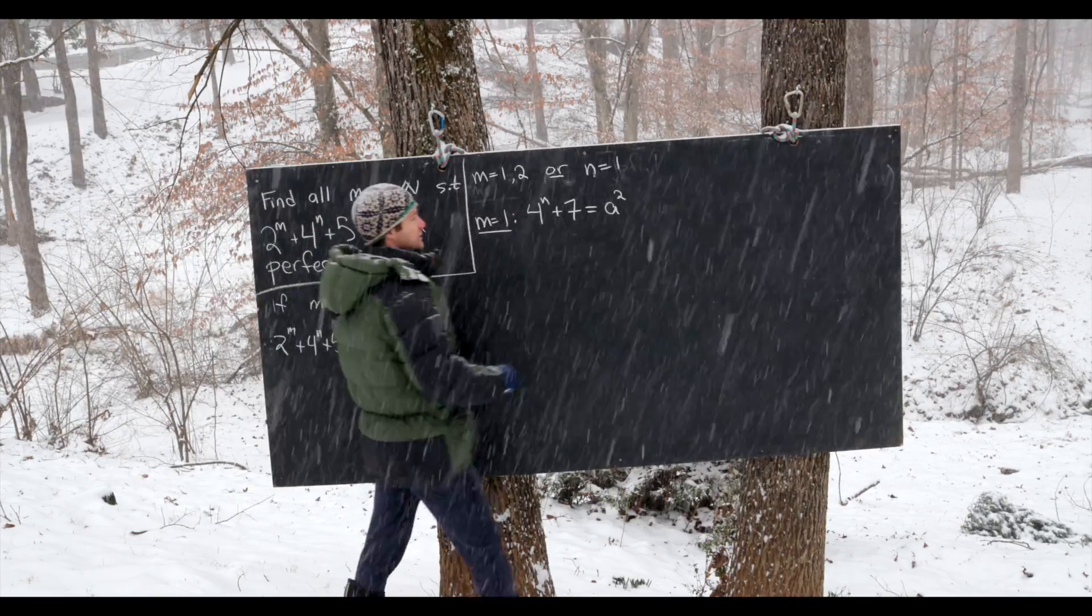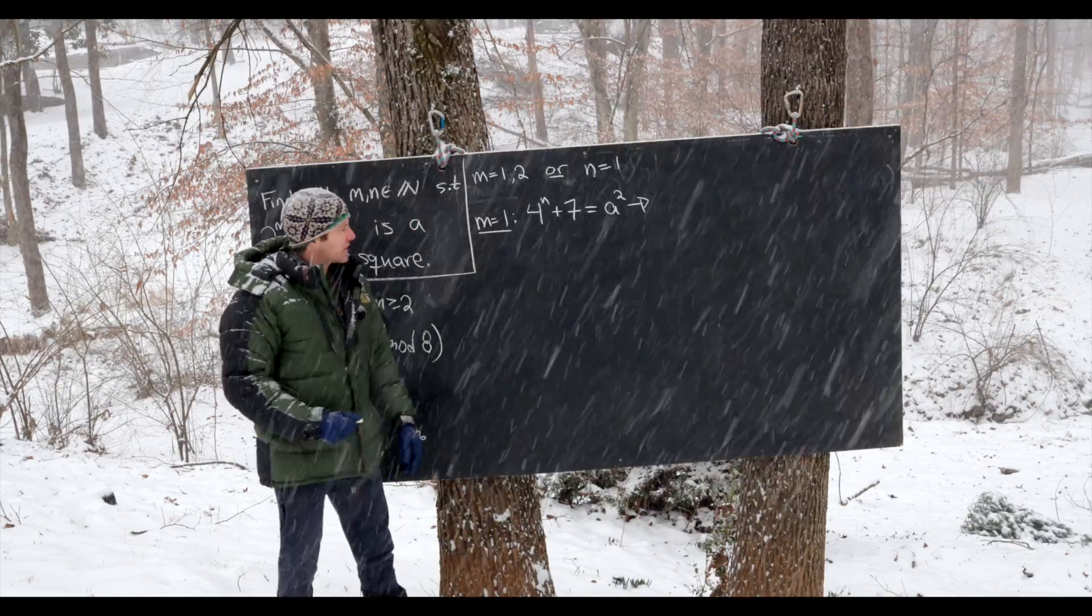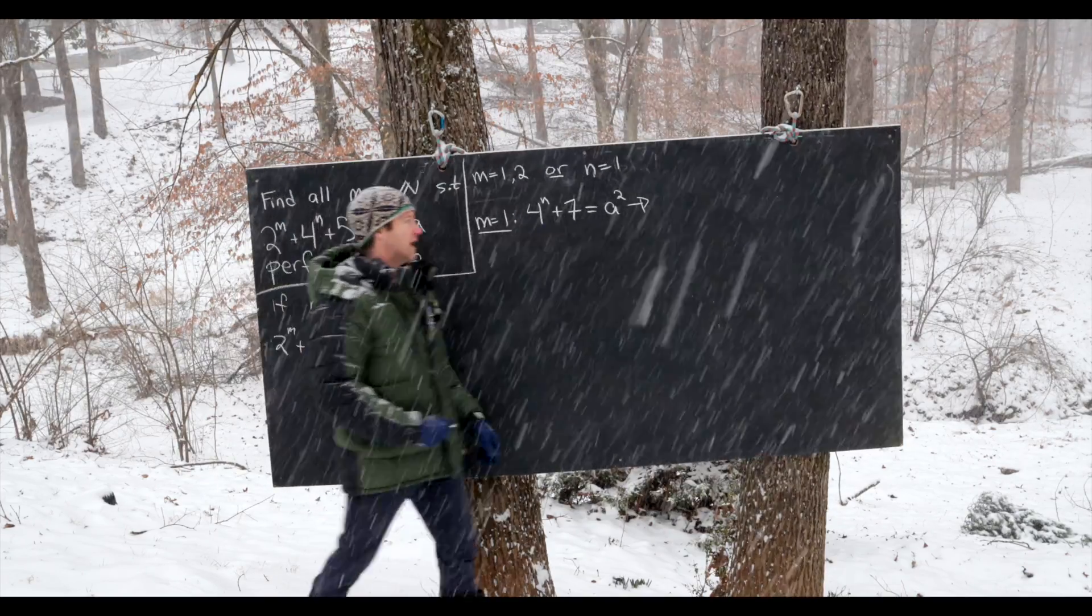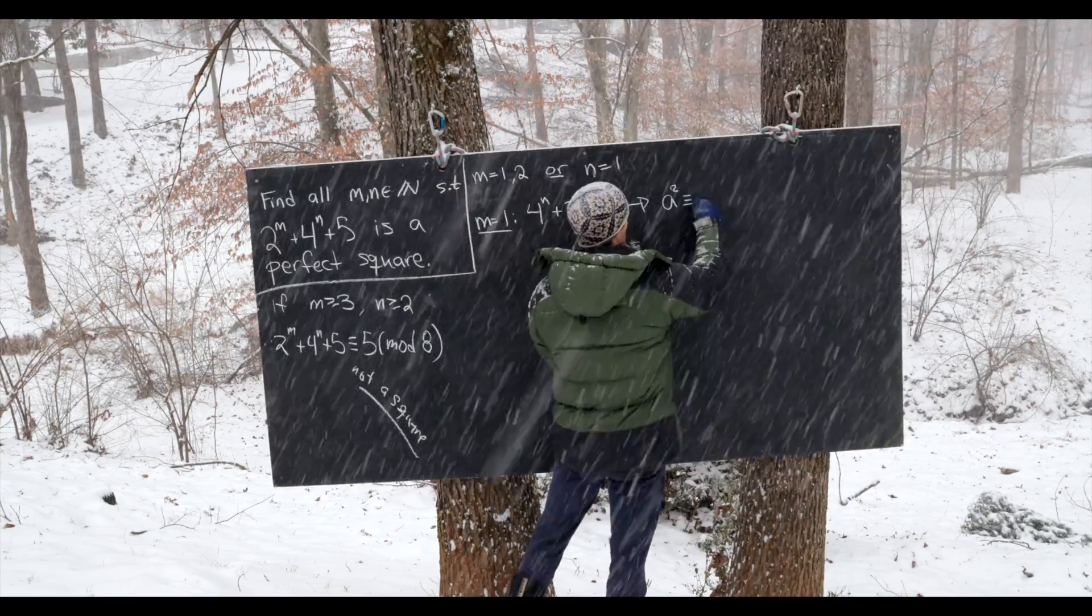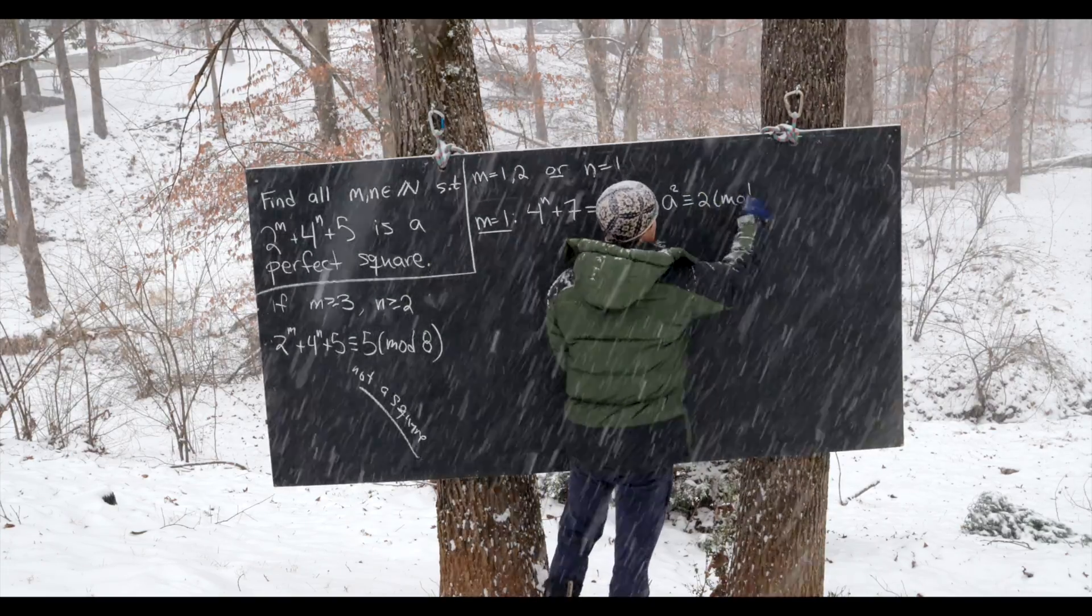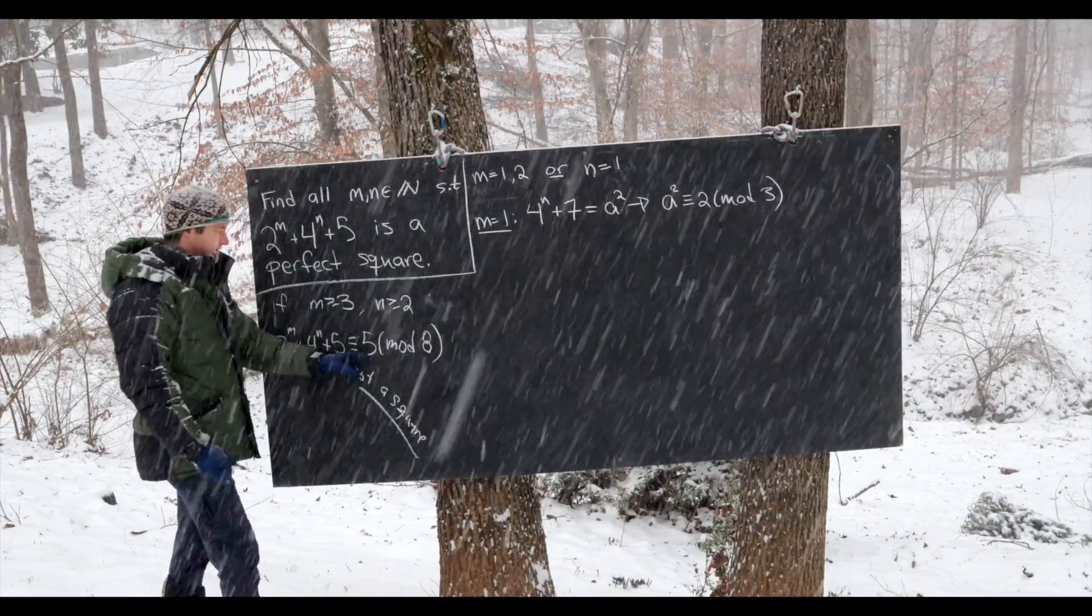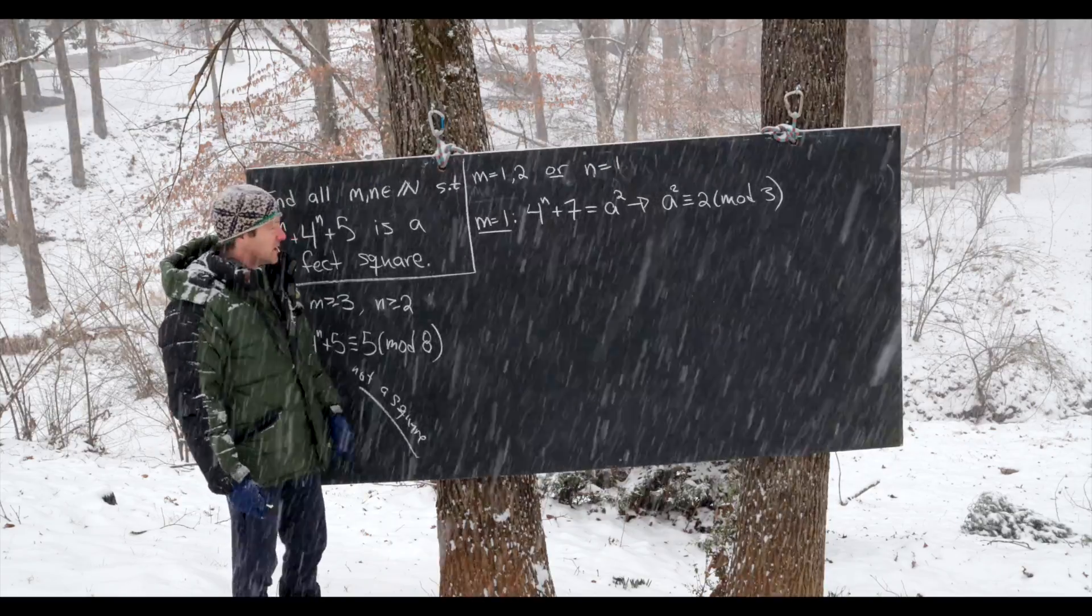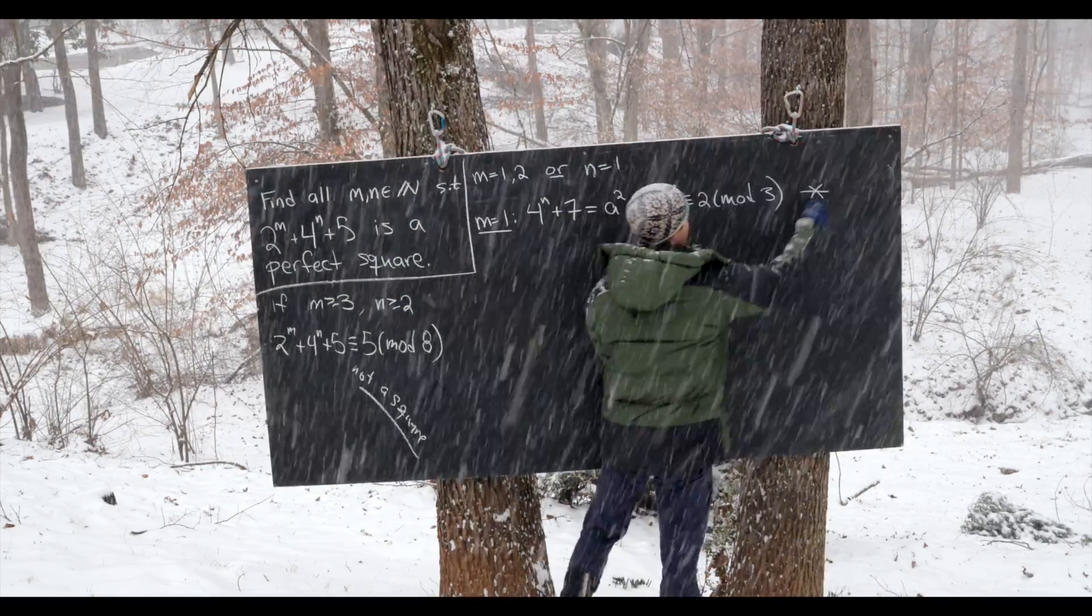But now we're going to reduce this mod 3 and we'll reduce this mod 3 because this is 1 mod 3 and this is also 1 mod 3, telling us that we have a squared is 1 plus 1 or 2 modulo 3. But just like over here where we use the fact that 5 is not a perfect square mod 8, we also know that 2 is not a perfect square mod 3.